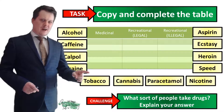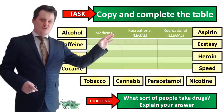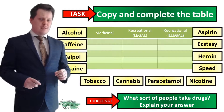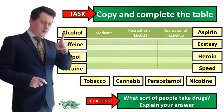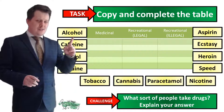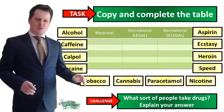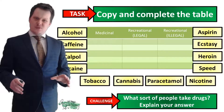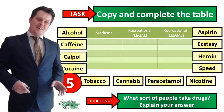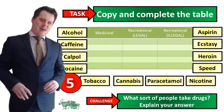The table goes down six lines and has three headings: medicinal, recreational legal, and recreational illegal. Once you've got that table, I want you to put all the drugs around the table into the correct column. For a challenge, I also want to know what sort of people take drugs — explain your answer. I'll put five seconds on the clock; pause if you need more time.